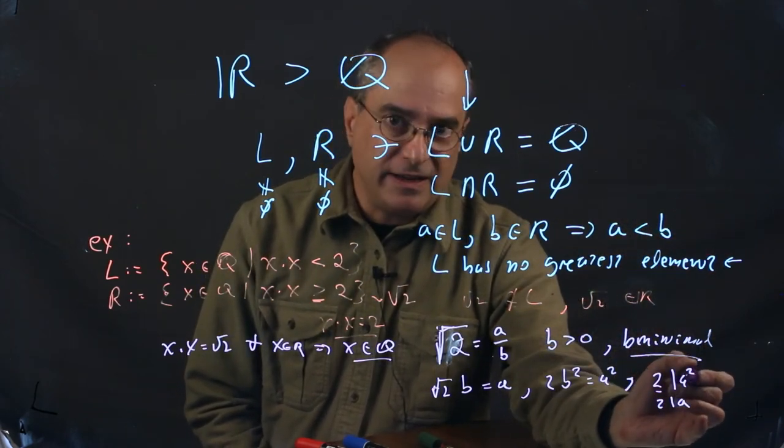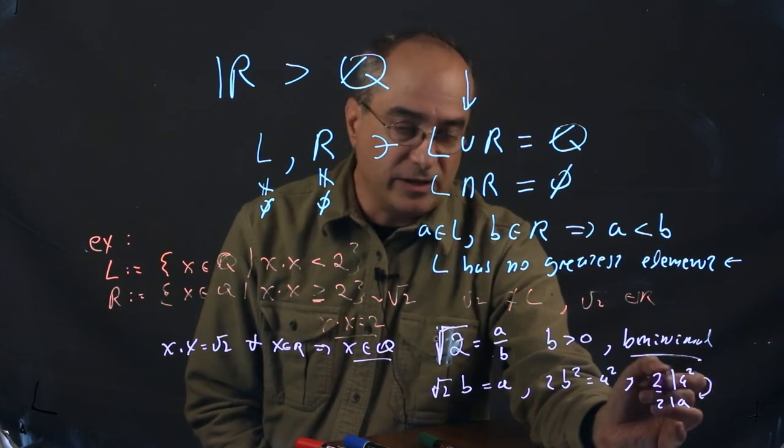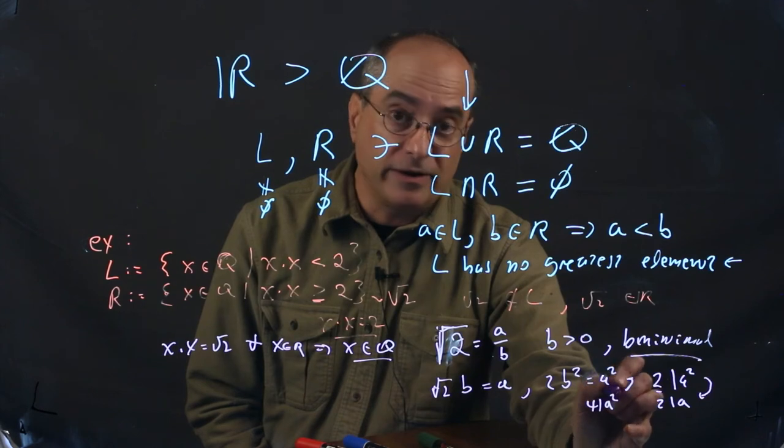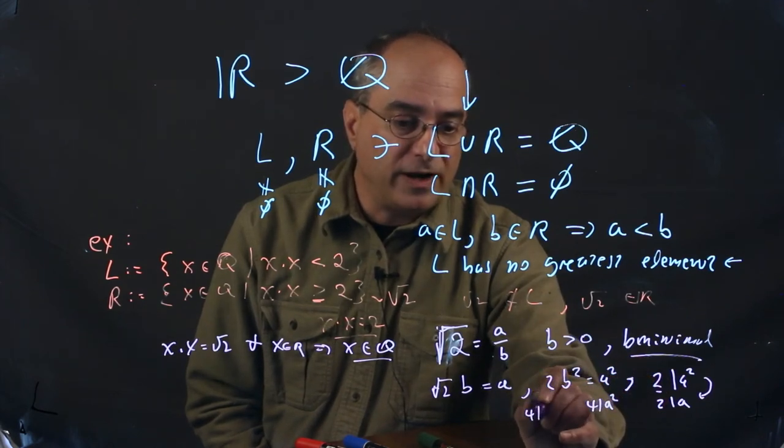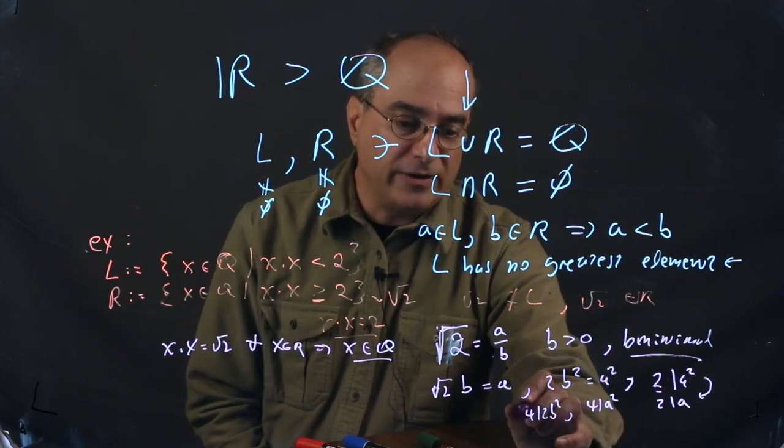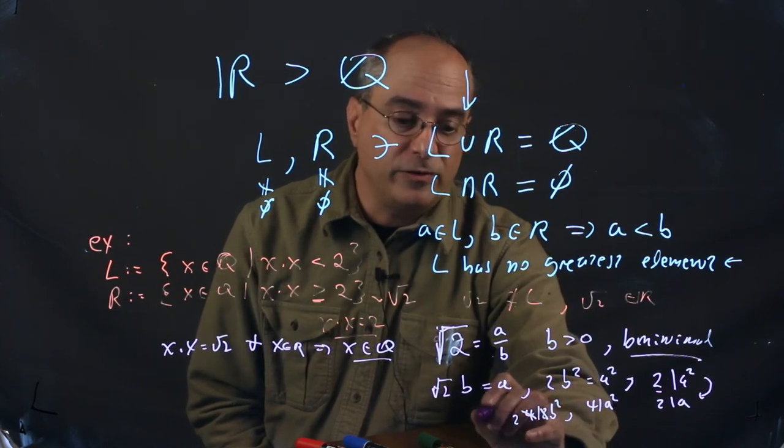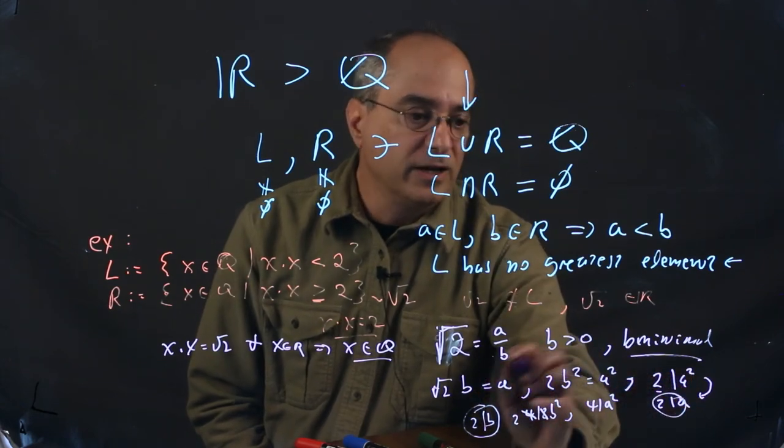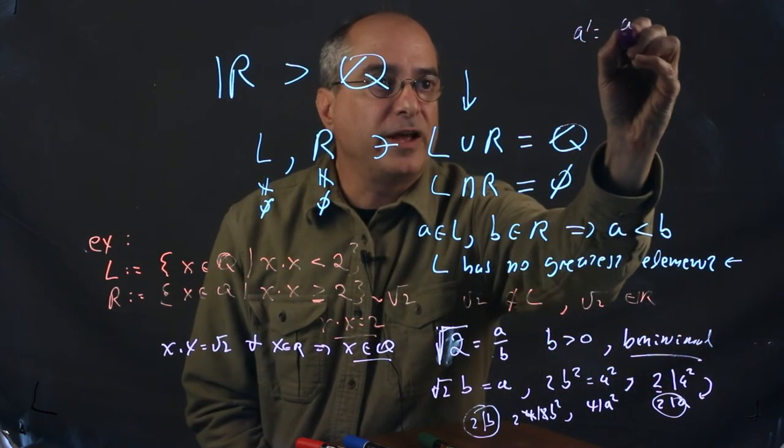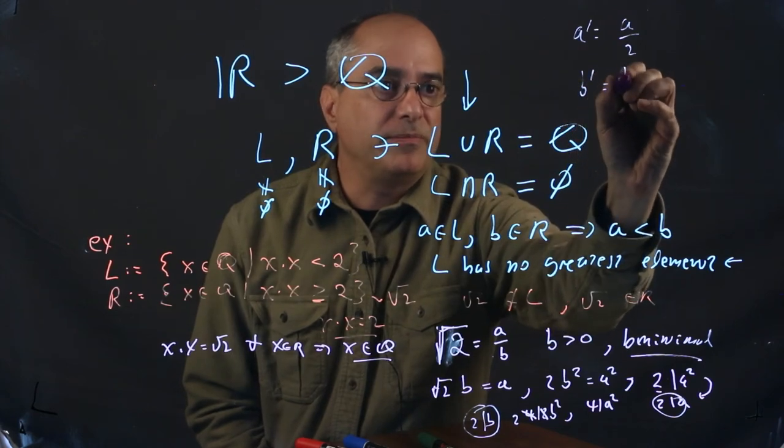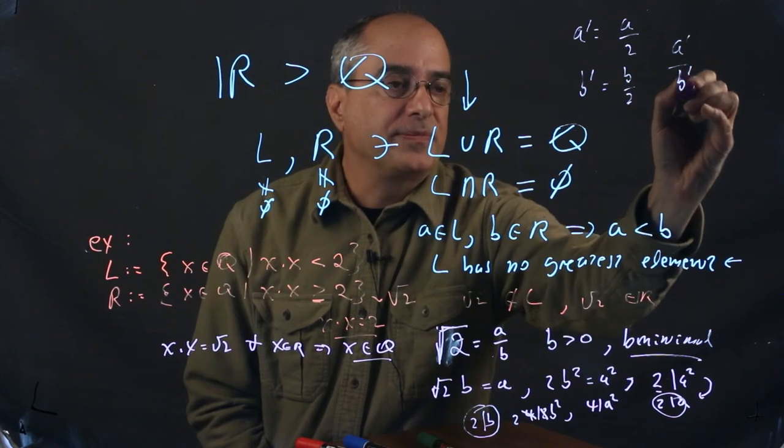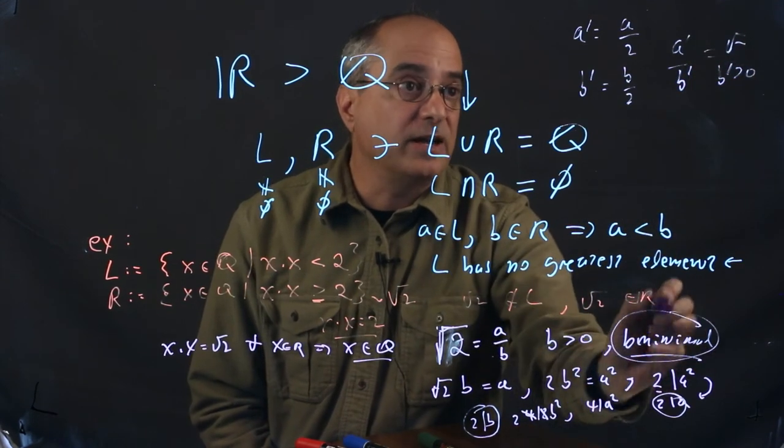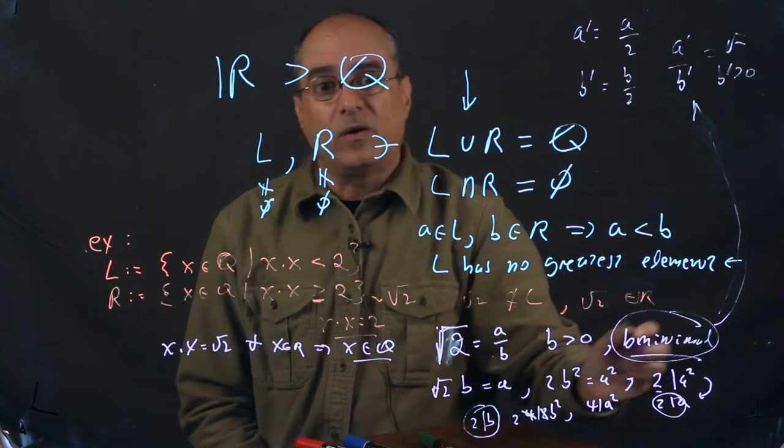So if 2 divides into A, which means 4 divides into 2B squared. 2 divides into B squared, so 2 divides into B. So 2 divides into A, and 2 divides into B. So we can form a new fraction. A prime equals A over 2 is an integer. B prime, that's what I mean, divides into means. B over 2 is another integer. A prime over B prime is another fraction. B prime is greater than 0, equal to square root of 2, violating the assumed minimality of B.